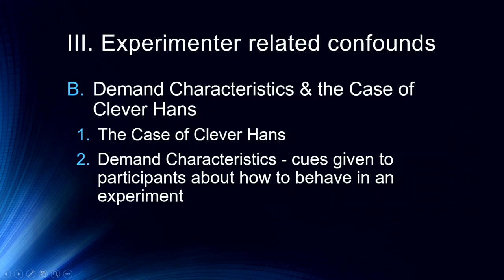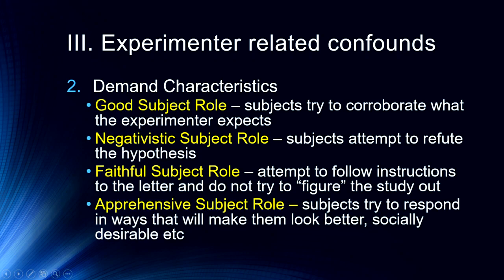This is what happens with a demand characteristic — when cues are given to participants about how to behave in an experiment, even at an unconscious level where people are encouraged to try harder or given unconscious body cues about the experiment. There are a number of different ways participants respond to these demand characteristics. First, we have the good subject role, where subjects try to corroborate what the experimenter expects — they want to verify your hypothesis. We don't want that; we want the truth and what's actually happening, not subjects doing what we think they should.